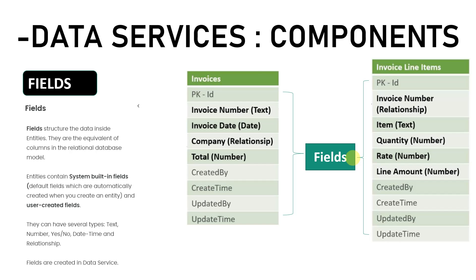Next are fields. Fields are the data inside the entities, equivalent to columns of a table. For example, in an employee table, employee name and employee ID would be fields. For our invoice entity, the invoice number, invoice date, company, and total will be the fields. Similarly for invoice line items, those attributes would be the fields.